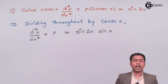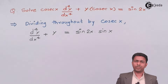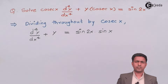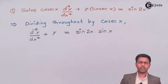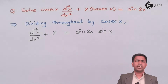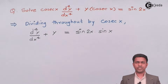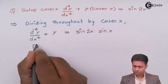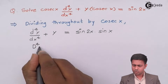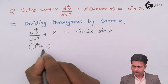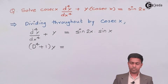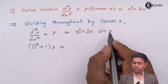We now have the higher order differential equation in standard form. We first find the complementary function, for which we need the auxiliary equation. The equation is d⁴y + y = 0, so we take y common and get d⁴ + 1 = 0.